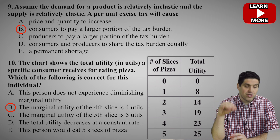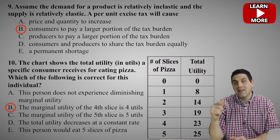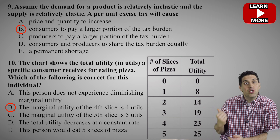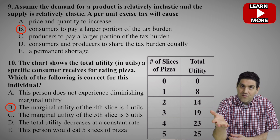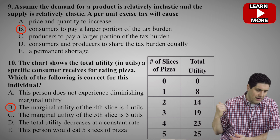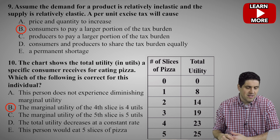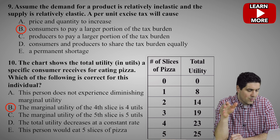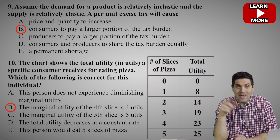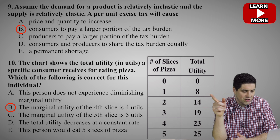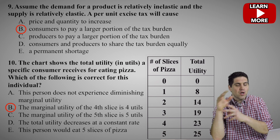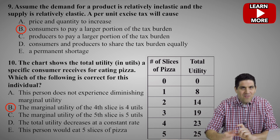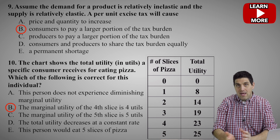The wrong answers: A says this person does not experience diminishing marginal utility — yes they do. The first slice gave them eight utils, and later they only got four additional utils, then two additional utils from the fifth slice. C is wrong too — the fifth slice gives only two utils of additional satisfaction. D says total utility decreased at a constant rate — no, total utility is increasing, just at a decreasing rate. E says this person will eat five slices — we don't know that without a price. If we knew the price and their satisfaction, we could calculate how many they should eat.